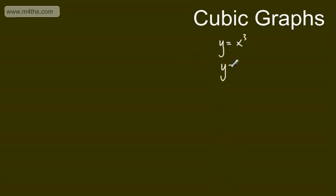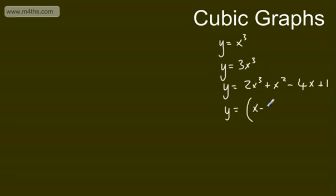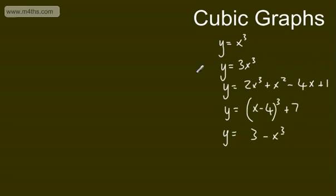Next are cubic graphs. These will be in the form y is equal to x cubed, or some variation. So y is equal to 3x cubed, y is equal to 2x cubed plus x squared minus 4x plus 1, or y is equal to x minus 4 all cubed plus 7. We might have y is equal to 3 minus x cubed. What we can see in these is the highest power of x is x cubed. We can still have an x squared or an x term, but we need the highest power to be x cubed.